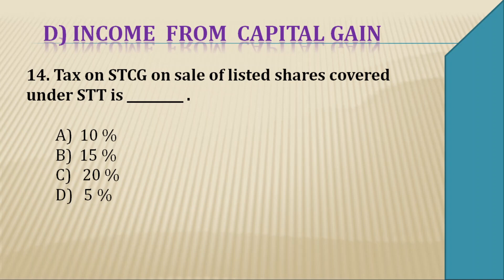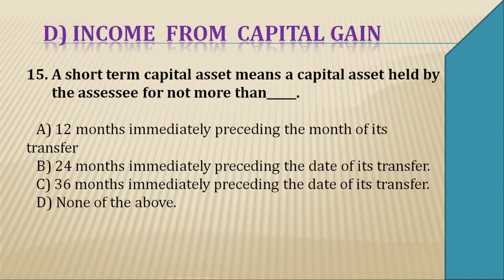Question 14: Tax on short-term capital gain (STCG) — short-term capital gain on sale of listed shares covered under STT is ____. Options are 10%, 15%, 20%, or 5%. The right answer is B — 15%.